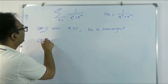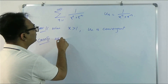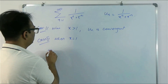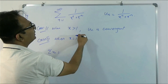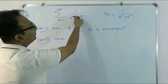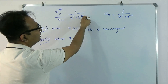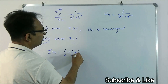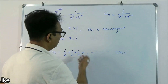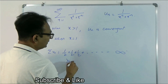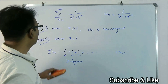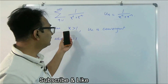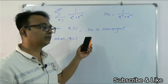Case 3, when x = 1: the series becomes 1/(1^n + 1^(−n)) = 1/(1 + 1) = 1/2 for every term, so the series is 1/2 + 1/2 + 1/2 + ... to infinity, which is clearly divergent. In summary: for x < 1 and x > 1, the series is convergent; for x = 1, the series is divergent.